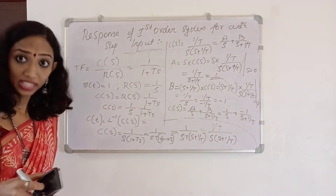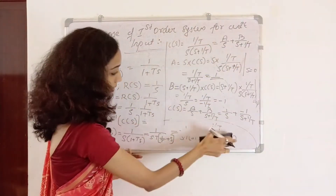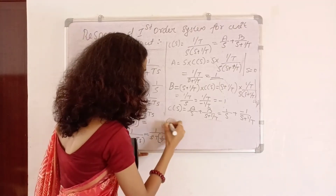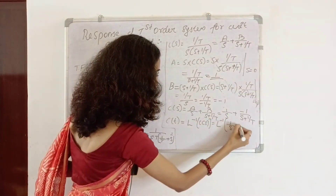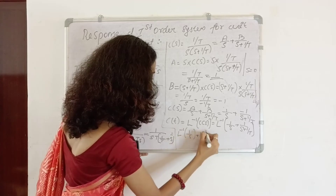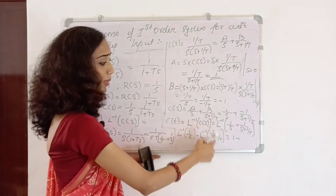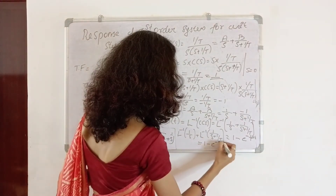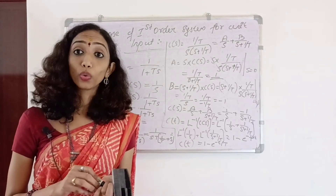C of T is equal to L inverse of C of S. Taking inverse Laplace: L inverse of 1 by S gives 1, and L inverse of 1 by (S plus A) gives e raised to minus A·T. So C of T equals 1 minus e raised to minus (t divided by T). That is the response of the first order system for unit step input.